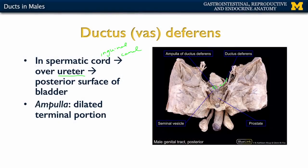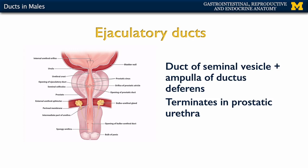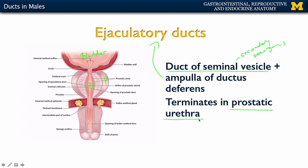The ductus deferens, at its dilated portion, meets up with the duct of the seminal vesicle, which is one of the secondary sex organs. Where the duct of the seminal vesicle meets the ampulla of the ductus deferens, that is referred to as the ejaculatory duct. Looking at this illustration, you have the bladder and the prostate, and it is in this small region where seminal fluid is deposited into what we refer to as the prostatic urethra. The fluid then continues through the entirety of the urethra.